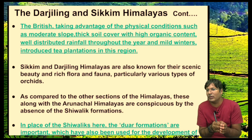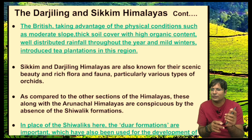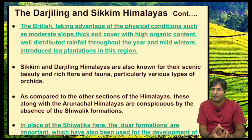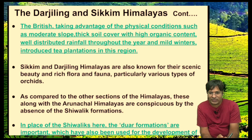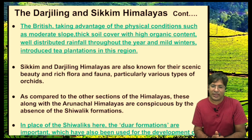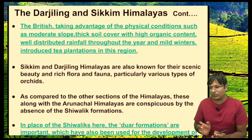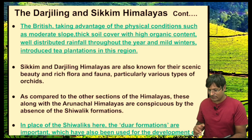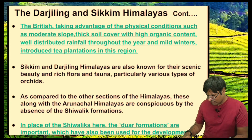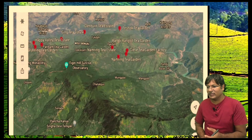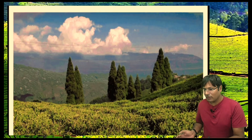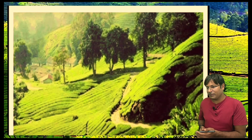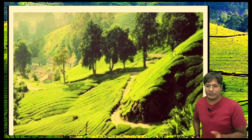Rainfall in this area is distributed almost throughout the year. Because of these favorable climatic conditions, the British introduced tea plantations here. Darjeeling is famous for its tea. The tea plantation gardens of Sikkim and the Darjeeling region, which lies in West Bengal, can be seen in the images shown.